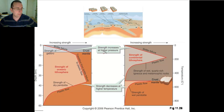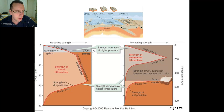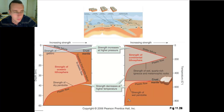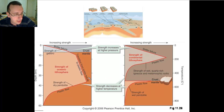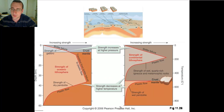The pattern is that as pressure increases, so does the strength of the rock and the likelihood for the rock to crack. But as temperature increases, the strength of the rock will decrease, and it makes it more likely for the rock to bend.